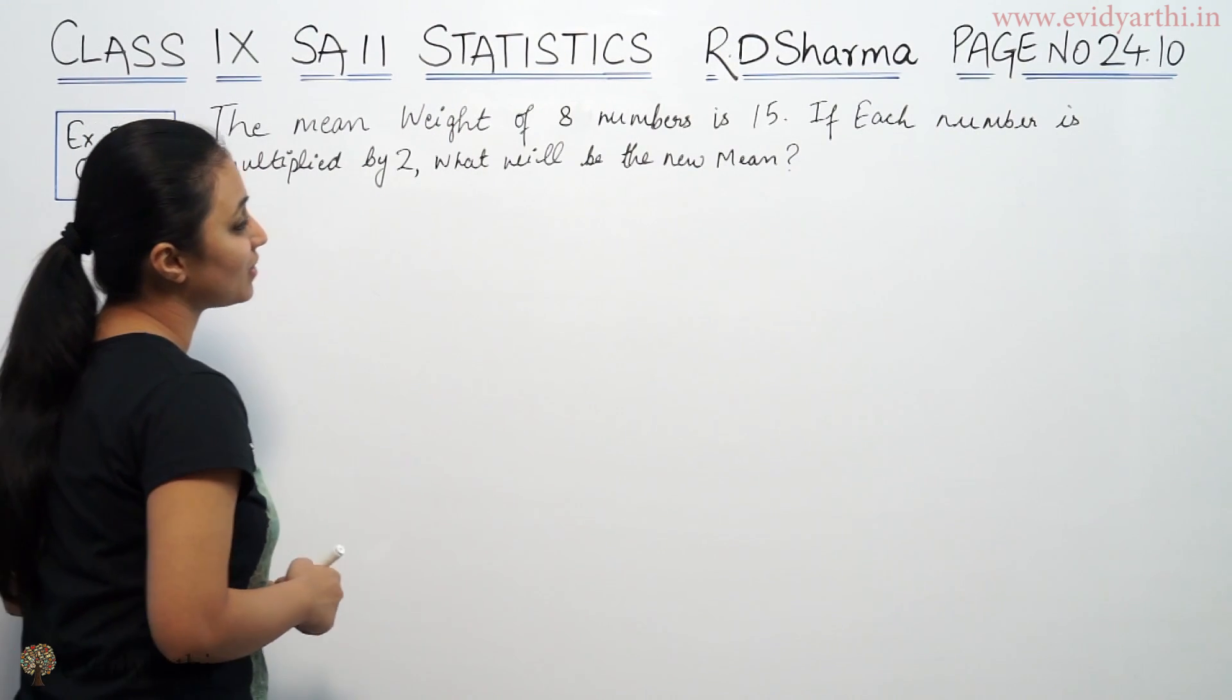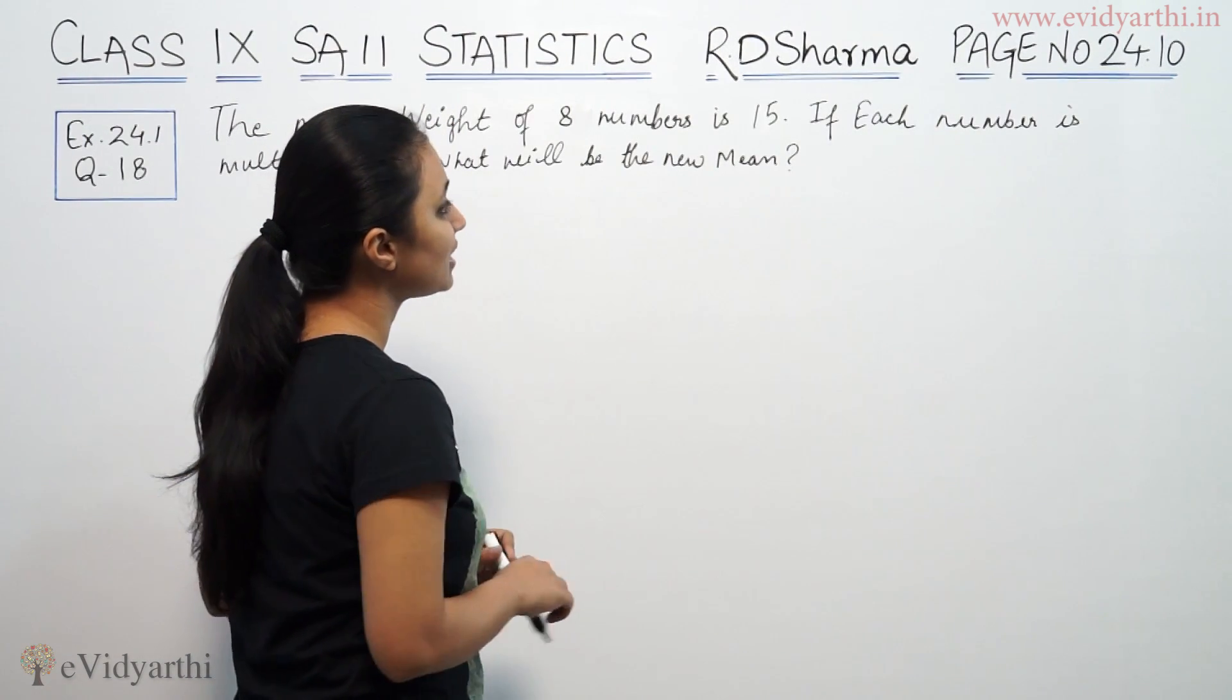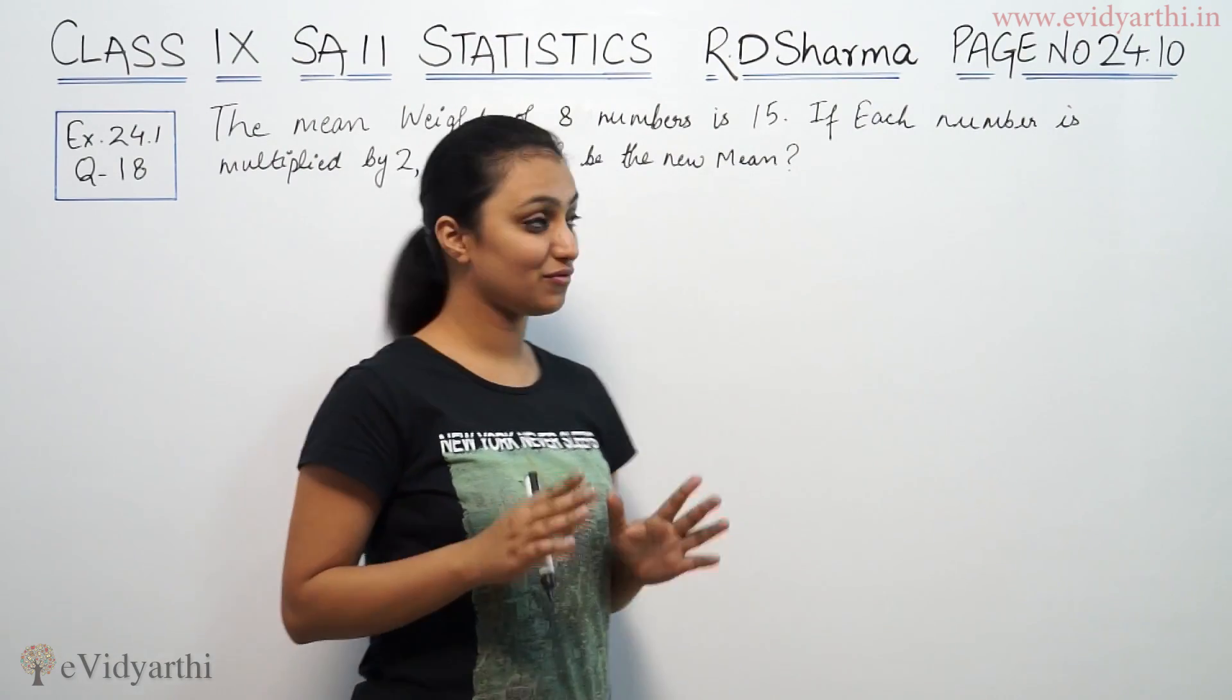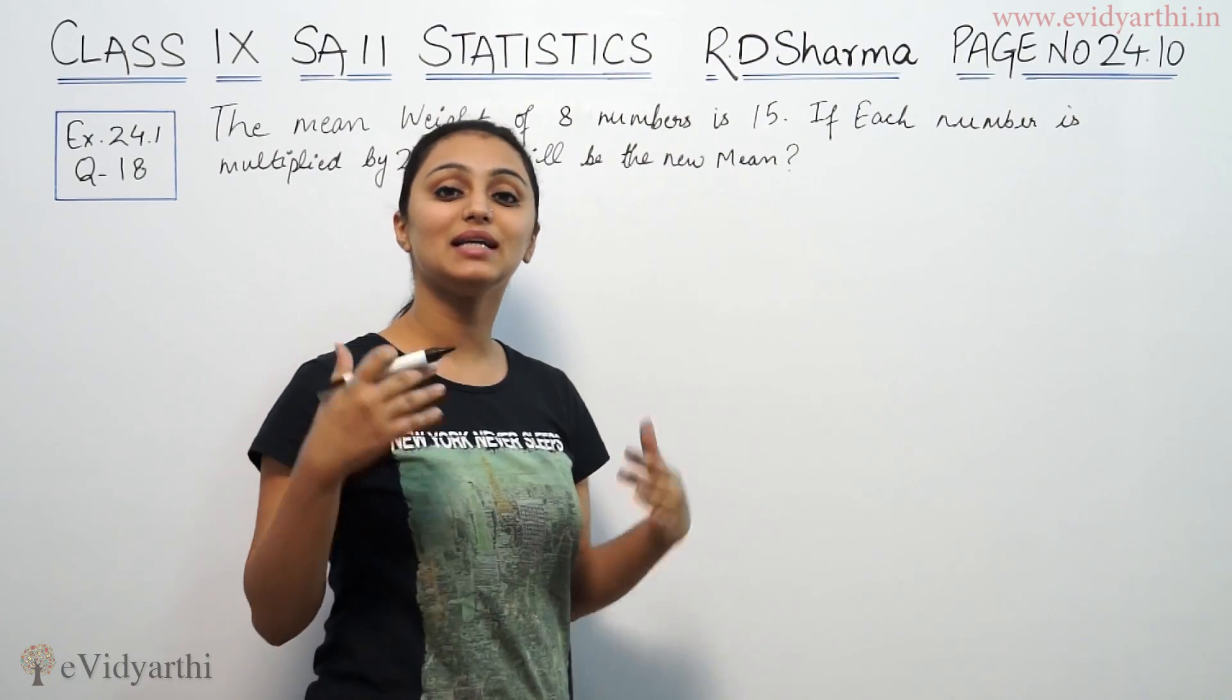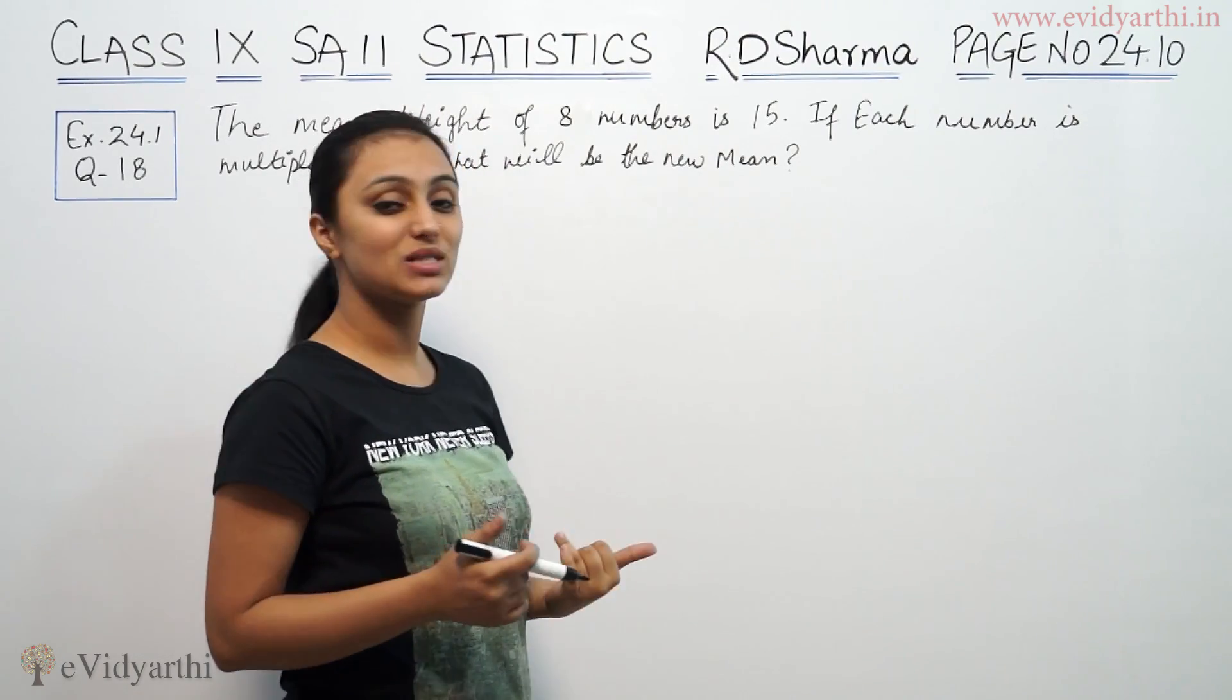It says the mean weight of 8 numbers is 15. If each number is multiplied by 2, what will be the new mean? If you have each number multiplied by 2, you will get the new mean.